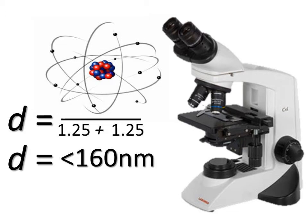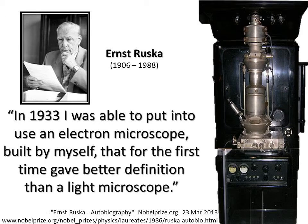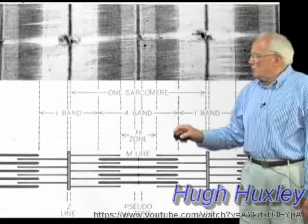The first prototype to accomplish this was built in 1931, and by 1933 we finally broke through the resolution limitations of conventional microscopes. By 1939 they were commercially available, and a guy named Hugh Huxley was one of the first researchers to use this new tool to investigate muscle contraction.